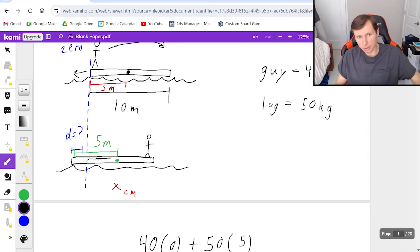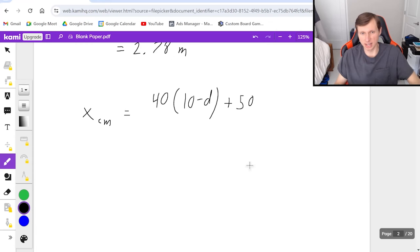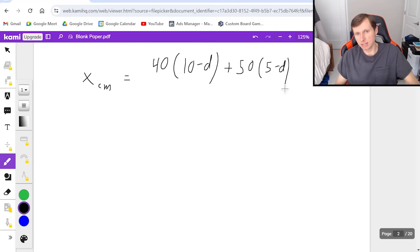And so therefore, I'm looking for this distance in black. And that distance is five minus d. And if you don't see it, then, well, I guess just memorize it because it's going to be this every time. So five minus d for the distance divided by the total mass, which is still 90. That is not changed.